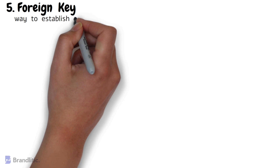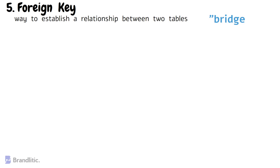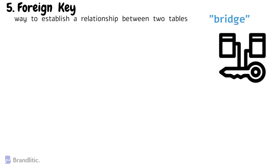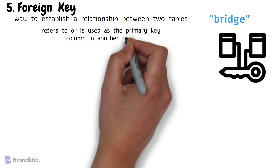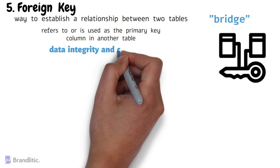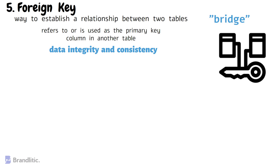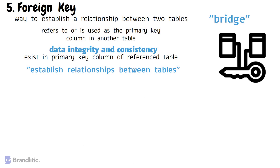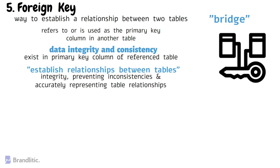Next: what is a foreign key? It is a way to establish a relationship between two tables. You may think of it as a bridge that connects information from one table to another. A foreign key is a column in one table that refers to, or is used as, the primary key column in another table. Its purpose is to maintain data integrity and consistency by ensuring that values entered in the foreign key column exist in the primary key column of the referenced table. By using foreign keys, we establish relationships between tables and retrieve related information.